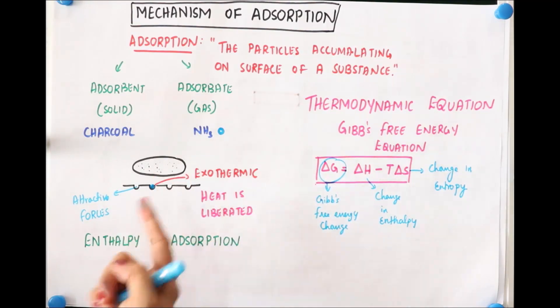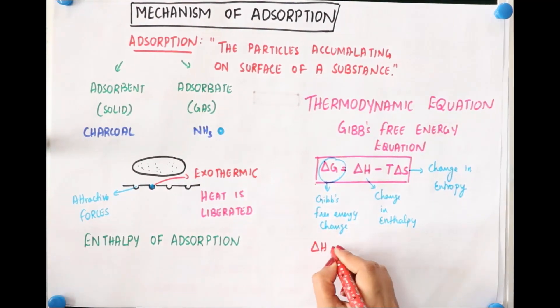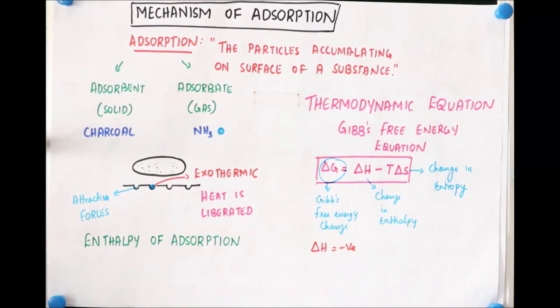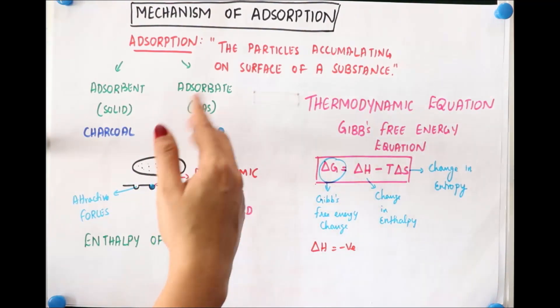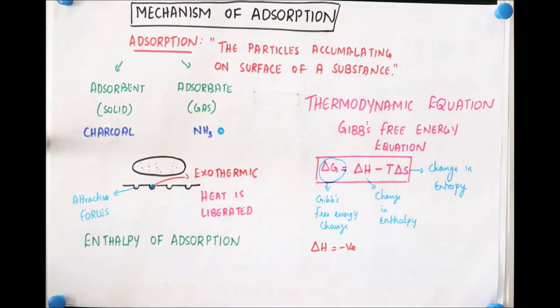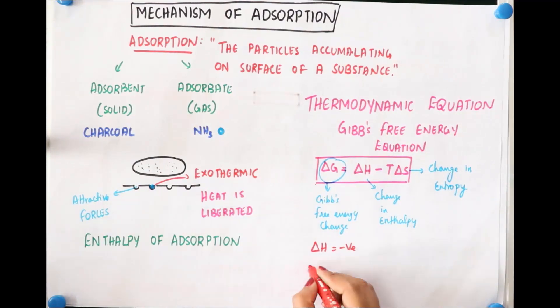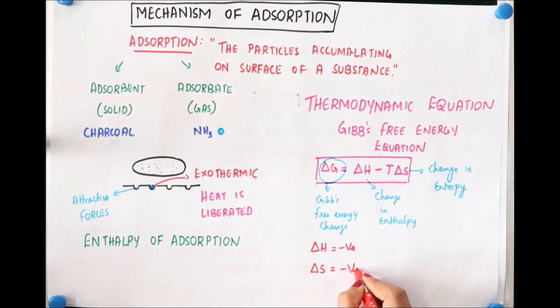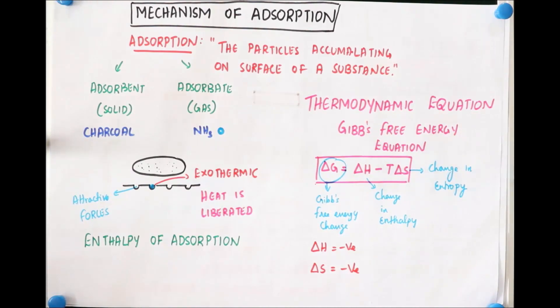So as we know from this reaction that the heat is liberated, we can say here delta H is negative, because heat liberation means the enthalpy change is negative. And we have something called entropy. Now gas initially will be in the disordered form, correct? When it gets settled on the surface, from disordered form it forms an orderly arranged system. So what should happen to delta S? Entropy should decrease, so the change in entropy must be negative. Yes, the change in entropy is negative. So as delta H and delta S becomes negative, the question is what happens to delta G?